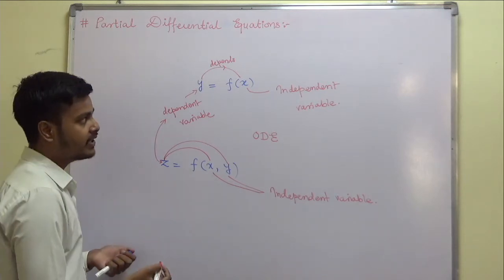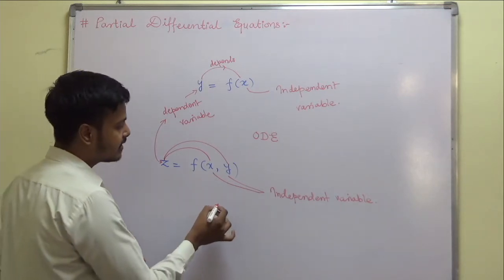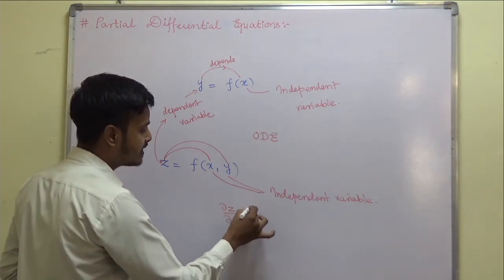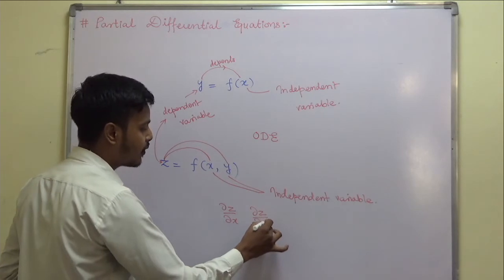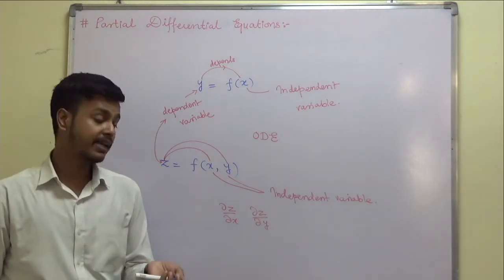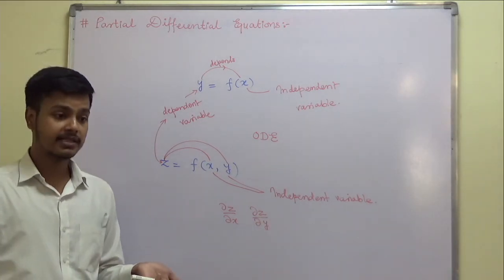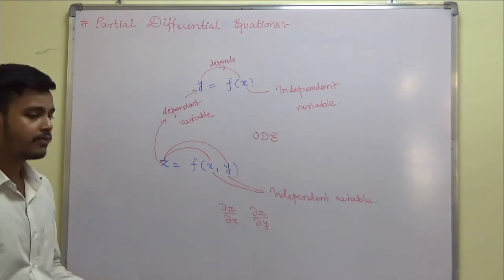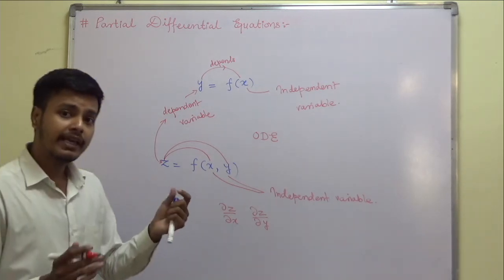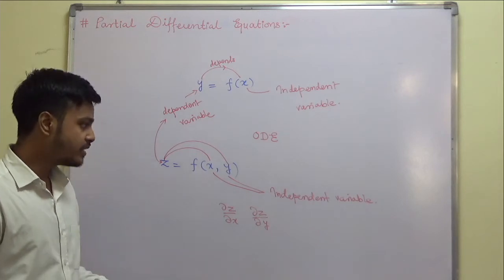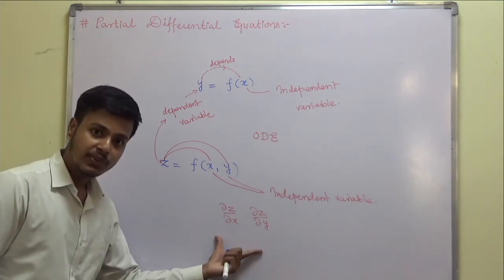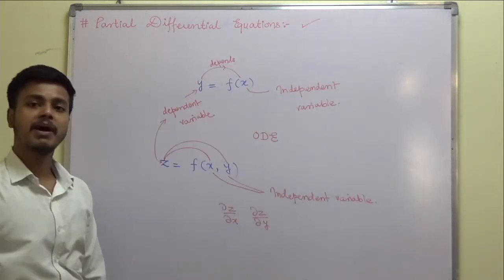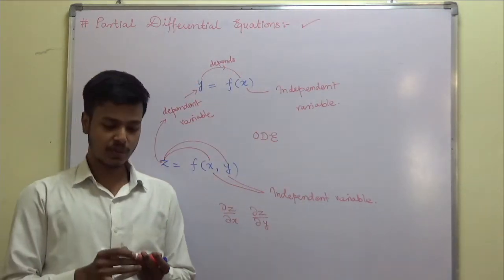We write those partial derivatives as del z by del x, del z by del y, del squared z by del x squared, del squared z by del x del y, and so on. An equation which involves partial derivatives is known as a partial differential equation.